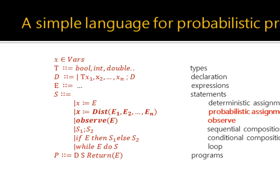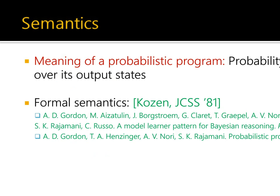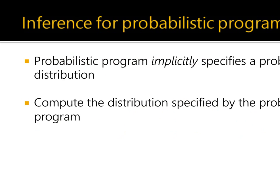Here is the syntax for a simple probabilistic programming language. As mentioned before, the probabilistic assignment and observed statements — marked in red — differentiate this language from a regular programming language. The meaning of a probabilistic program is the probability distribution over its output states. The seminal paper by Dexter Kozen was the first to formalize the semantics of a probabilistic program. Inference is the process of efficiently estimating this implicit distribution specified by a probabilistic program.